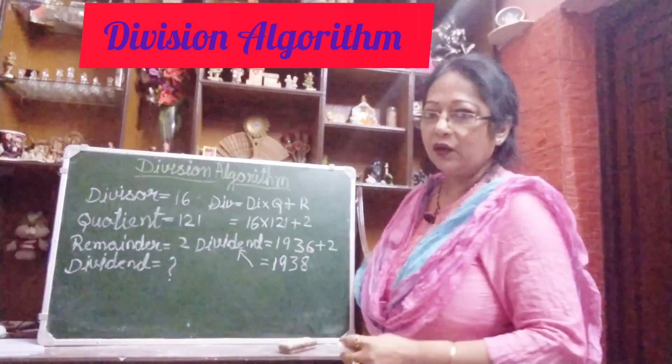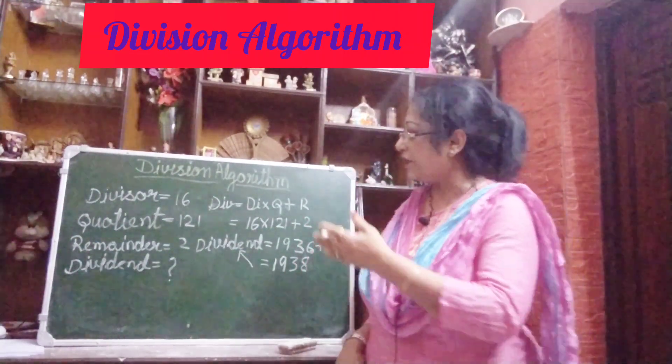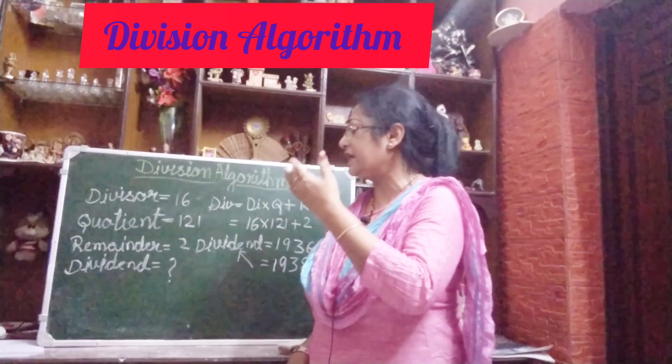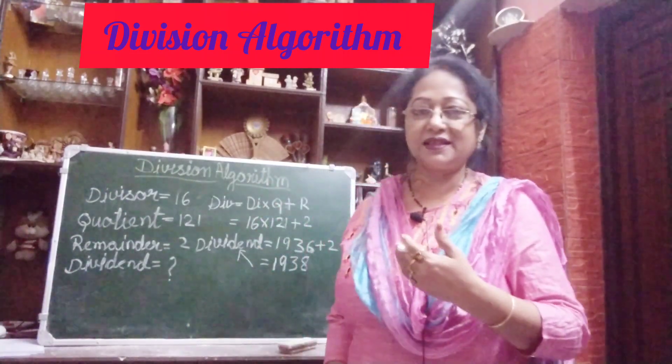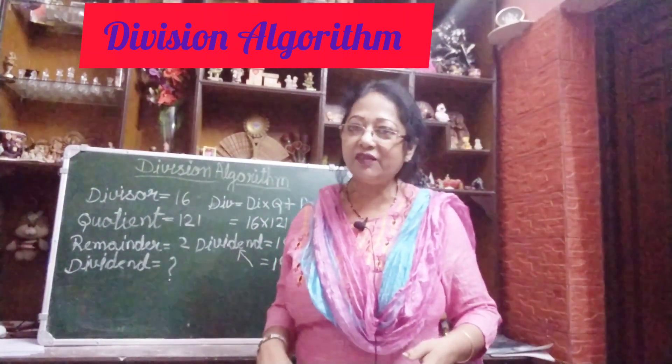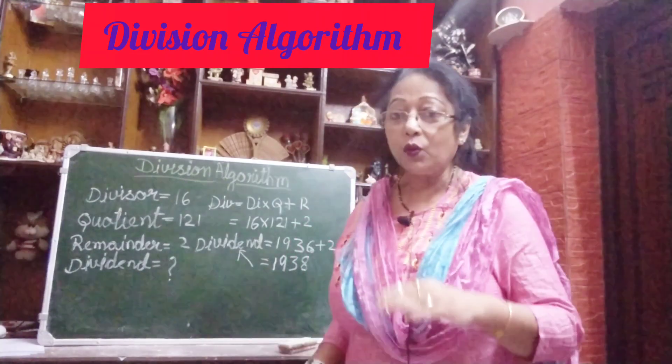This way you can find out the dividend easily. If the divisor is given, the quotient is given, and the remainder is given, you can easily find out the dividend. Very easy.